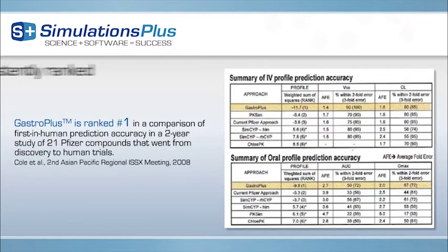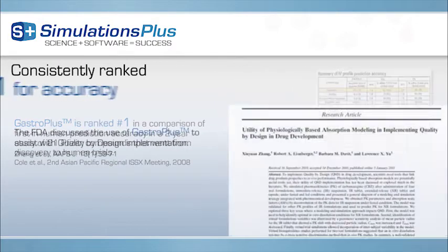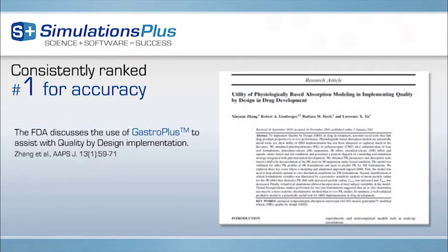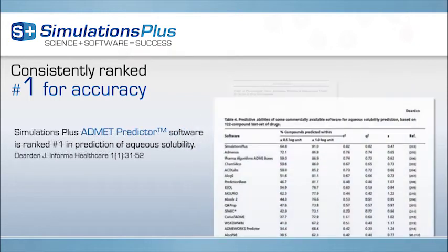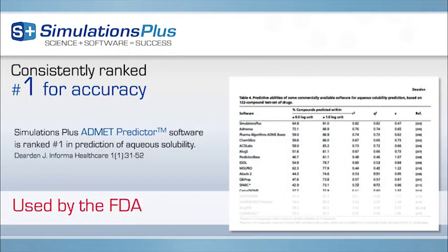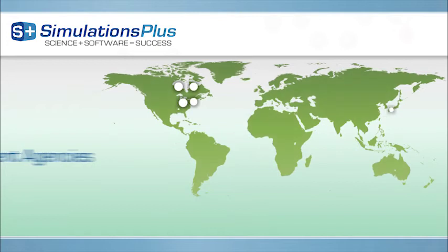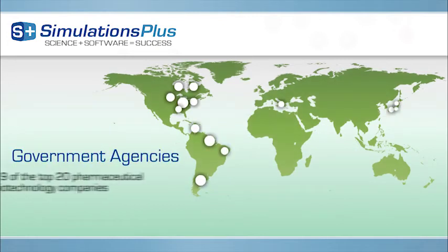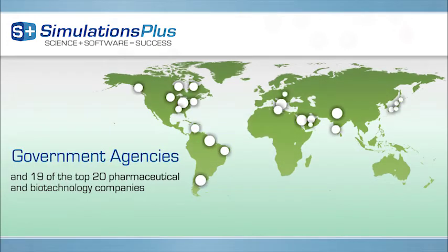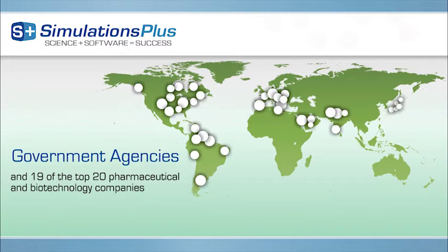Simulations Plus software is consistently ranked number one for accuracy in peer-reviewed journals, and is used by hundreds of large, mid-size, and small pharmaceutical, generic, chemicals, and consumer goods companies.